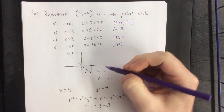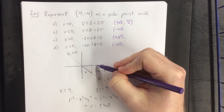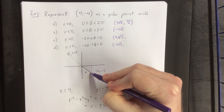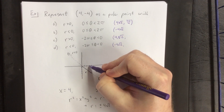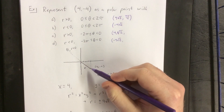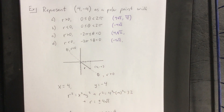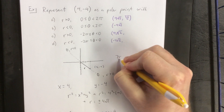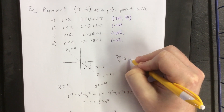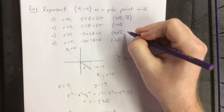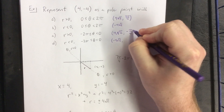The angle 7π/4 is representative of starting at the polar axis and rotating all the way around to that direction. The alternative is to rotate in a negative direction, so a negative angle would be to take 7π/4 and subtract 2π. For the negative theta with positive r, taking 7π/4 minus 2π gives a coterminal angle of negative π/4.